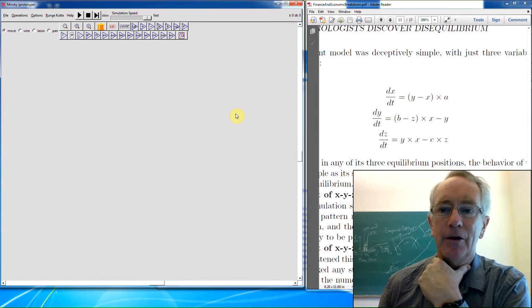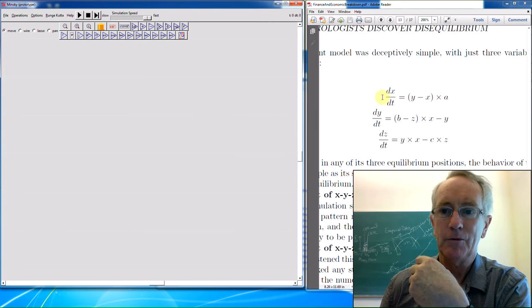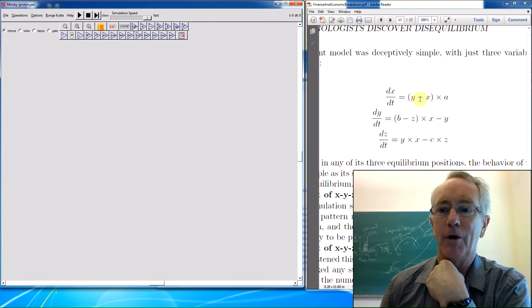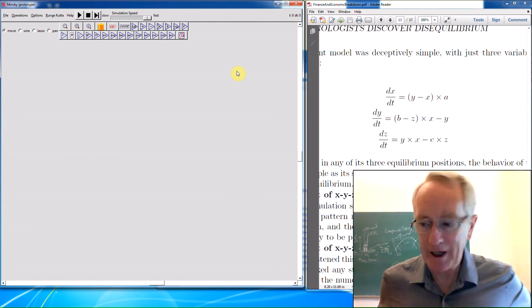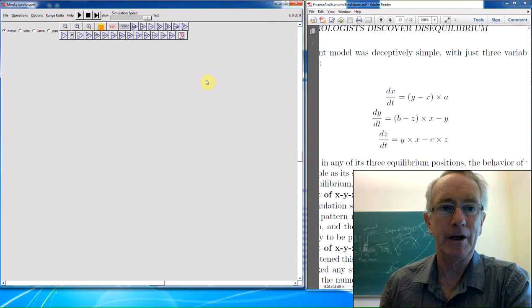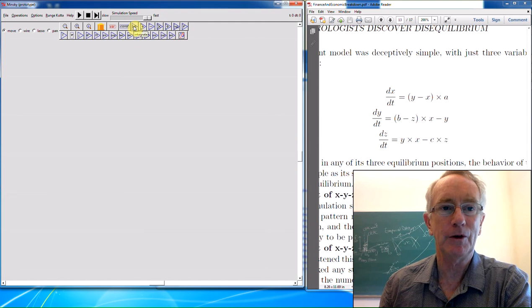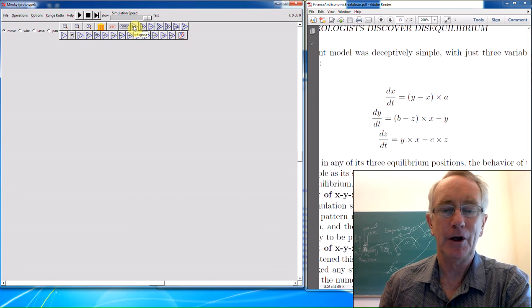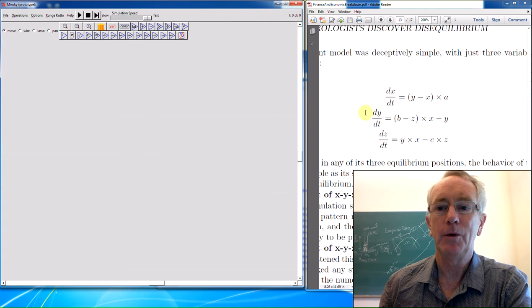If you want to convert that to a system dynamics format in any program, but in Minsky of course I'm going to be using here, you have to basically integrate both sides. So you then say the integral of x is going to be equal to the integral of y minus x multiplied by a. The reason for using this is that integration is a much more stable mathematical process than differentiation. It's become the standard way of displaying the equations.